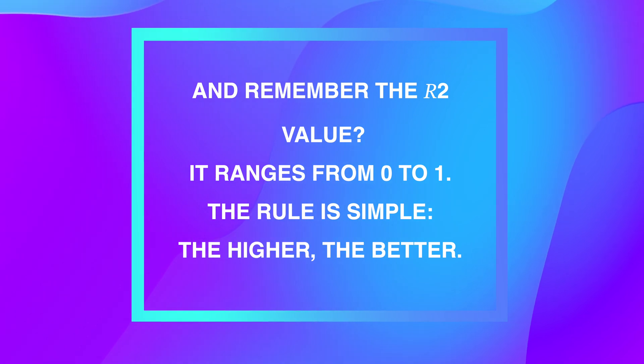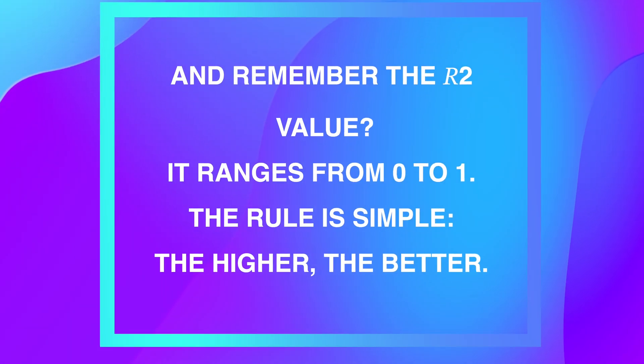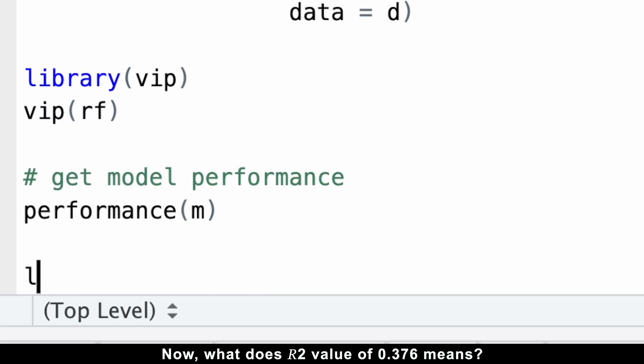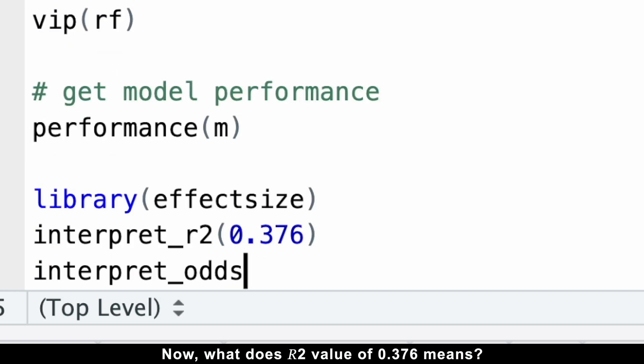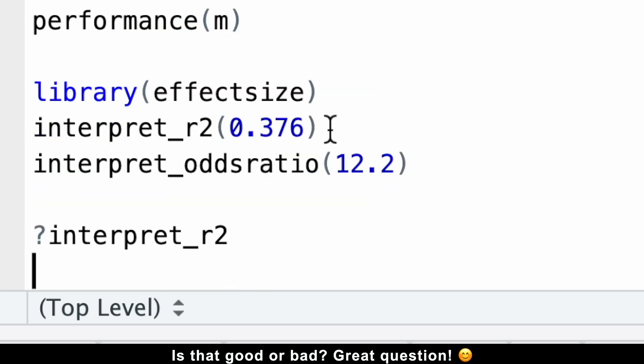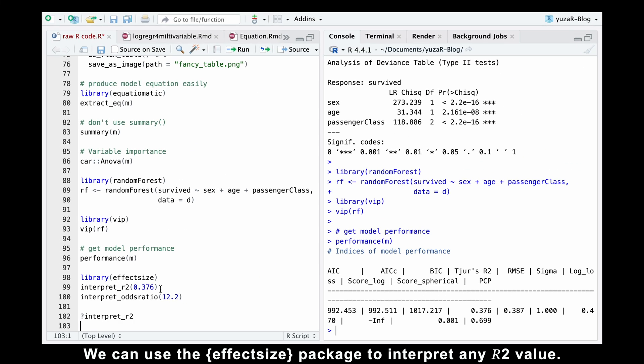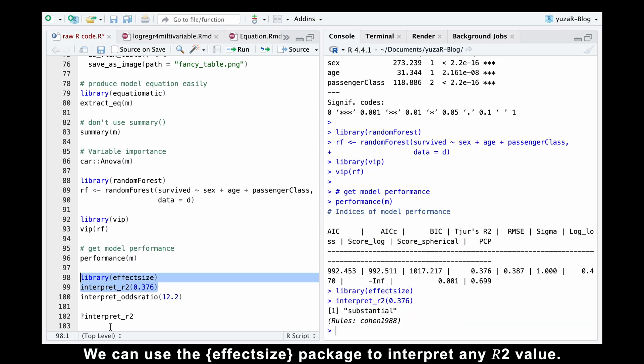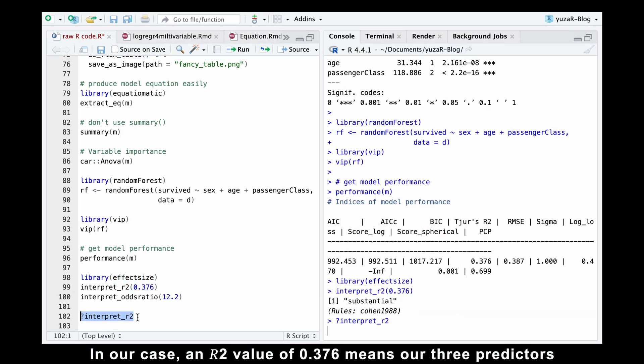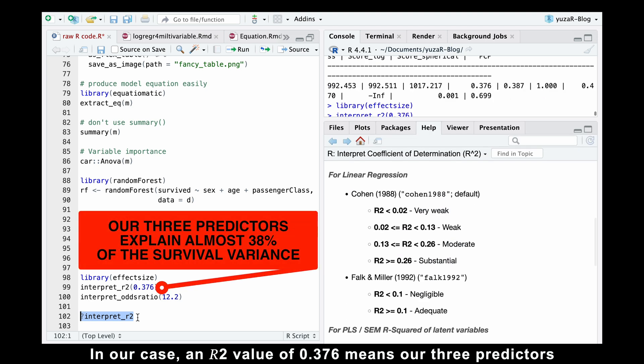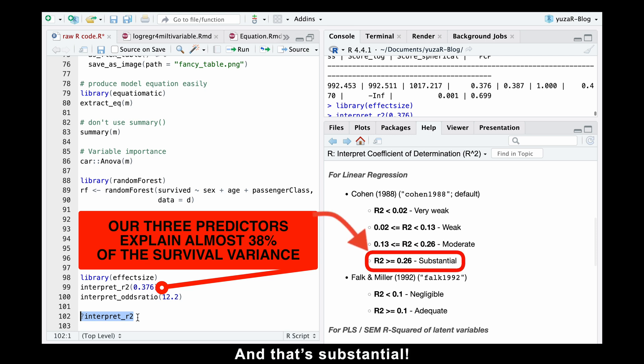And remember the R-squared value? It ranges from 0 to 1. The rule is simple. The higher, the better. Now, what does an R-squared value of 0.376 mean? Is that good or bad? Great question. In addition, we can use the effectsize package to interpret any R-squared value. In our case, an R-squared value of 0.376 means our three predictors explain almost 38% of the survival variance. And that's substantial.